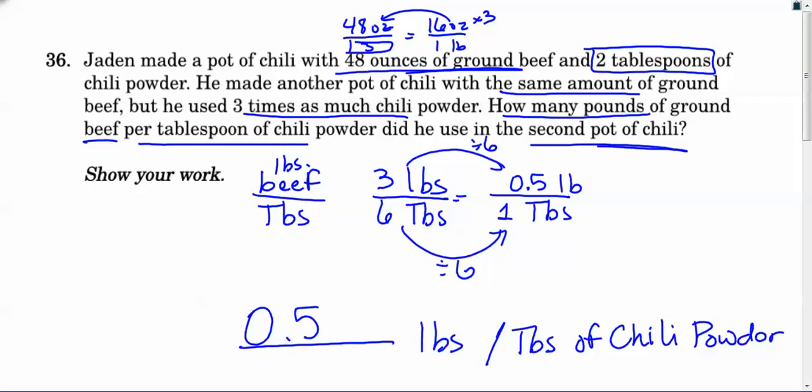36, the last one we're going to go over says Jada made a pot of chili with 48 ounces of ground beef. So this question was asking about pounds of ground beef. So if you want to figure out 48 ounces, you got to divide it by 16 ounces, right? Per pound, figure out that there's three pounds of beef there. All right. He's got three pounds of beef. All right. And he's using two tablespoons of chili to do that. But then it's really asking you about the second pot where he uses the same amount of ground beef. So again, three pounds, you'll notice that in my proportion below here. So three pounds, but he's using three times as much chili powder. You're not using three tablespoons. You're using three times the amount. So he started with two tablespoons.